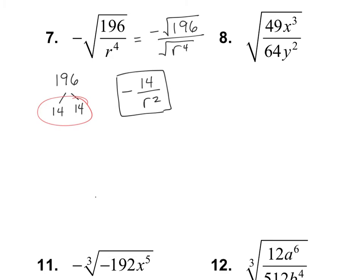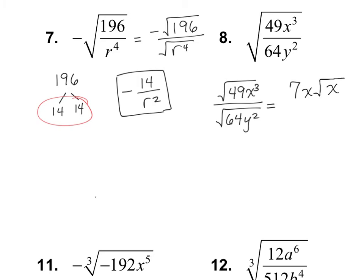For number 8, I have 49x to the power of 3 on the top, and on the denominator I have 64y squared. The square root of 49 is 7, and I have 3 x's. If I think about that, that's the same as x squared times x. So I'm going to take out one x and leave an x on the inside. And then the square root of 64 is 8. And the square root of y squared is y. So that is going to be my answer for number 8.